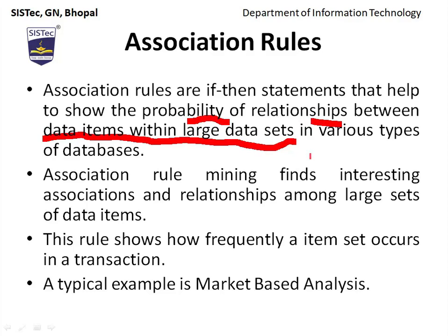Association rule mining is used to find relationships among data items within a large dataset. It can also show how frequently an item set occurs in a transaction — how frequently an item appears in transactions. It is basically used for market basket analysis purposes.